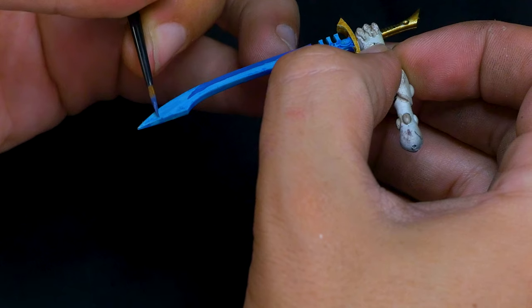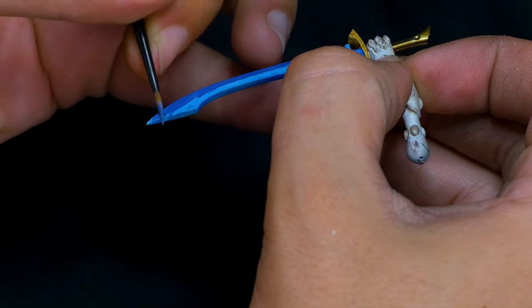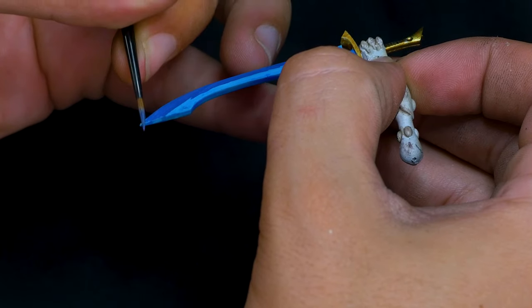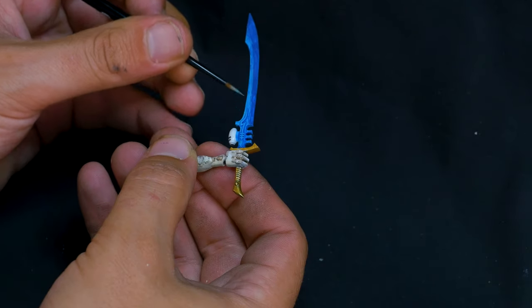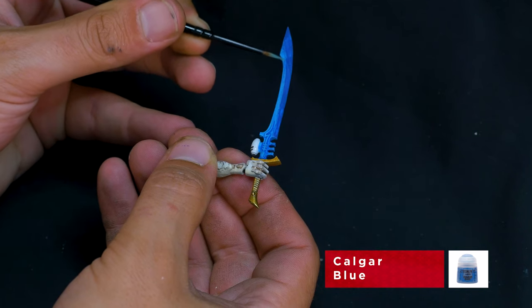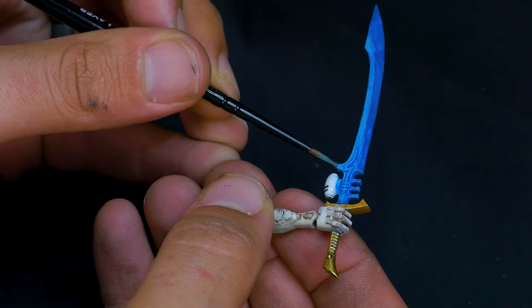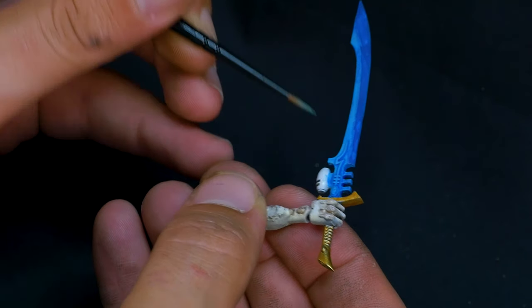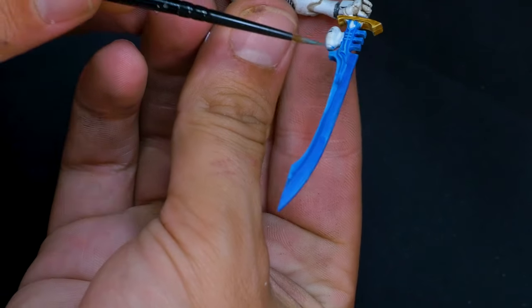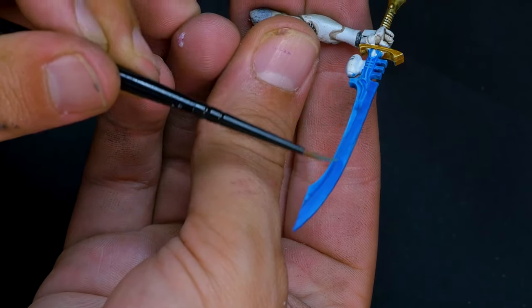These different blues were to give the impression that there was light moving around inside the blade. On the other side of the blade, I wanted to light it up a bit with a bit of Calgar Blue, which is a lighter blue. Same principle as before, just building organic shapes on the back end of the blade because this is where the light is emanating from in this case anyway. I mean, it's a piece of ancient technology. I don't know how it works.